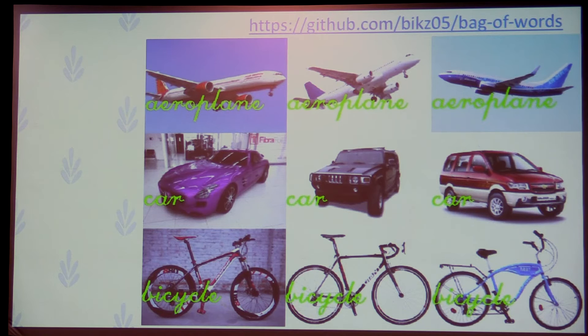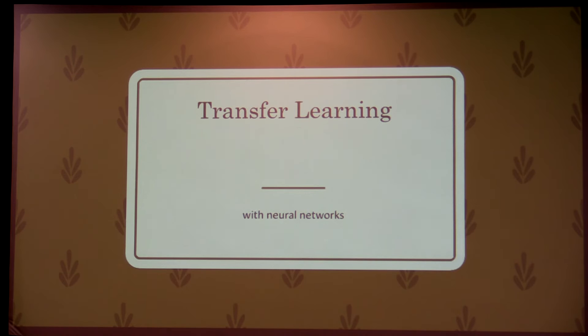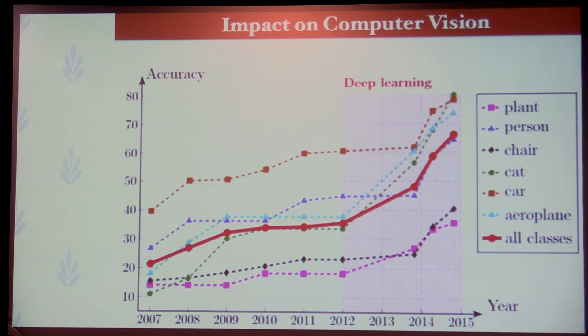If you need a beginner's introduction to deep learning, I would highly recommend Irene Chen's talk at PyCon this year — a really entertaining and well-explained talk. Looking at the impact of deep learning on computer vision: from 2012, accuracy has gone up dramatically. So why use bag of features, which is pre-2012, when you can do deep learning?